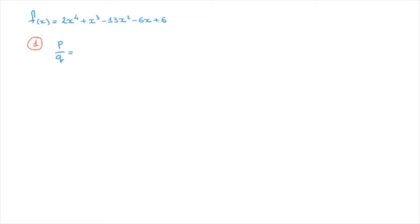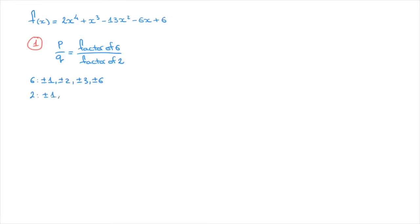So any rational zero must equal a factor of 6 over a factor of 2. To be clear, if any zeros of this polynomial are rational numbers, they must equal some factor of 6 over some factor of 2. The factors of 6 are ±1, ±2, ±3, and ±6. The factors of 2 are ±1 and ±2. Using these factors, we make a list of potential rational zeros by dividing each factor of 6 by each factor of 2.